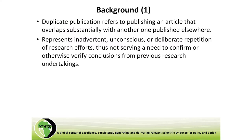Now I want to talk about something very important: duplicate publication. When we want to share our data, our research, our open science, we also want to make sure it is impactful and used properly — not just publishing for the sake of publishing. Duplicate publication refers to publishing an article that overlaps substantially with another one published elsewhere, and it is now becoming a serious issue that researchers need to think about.